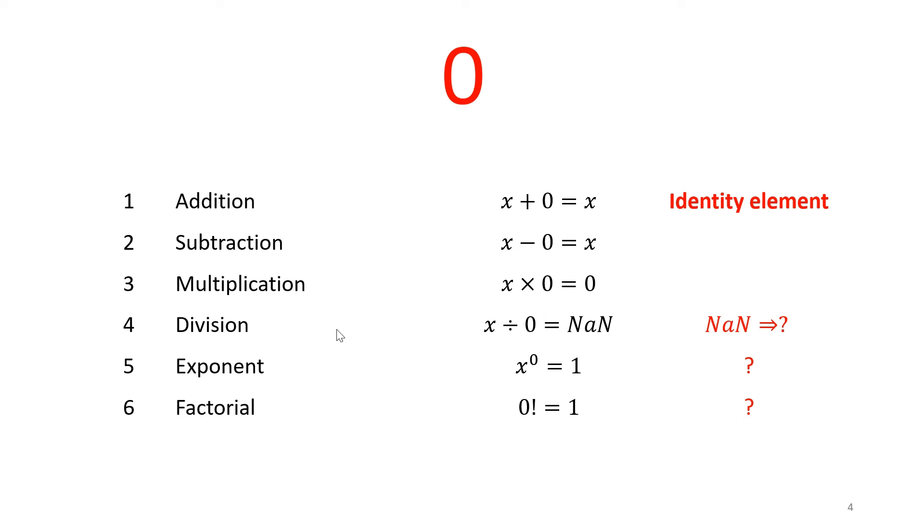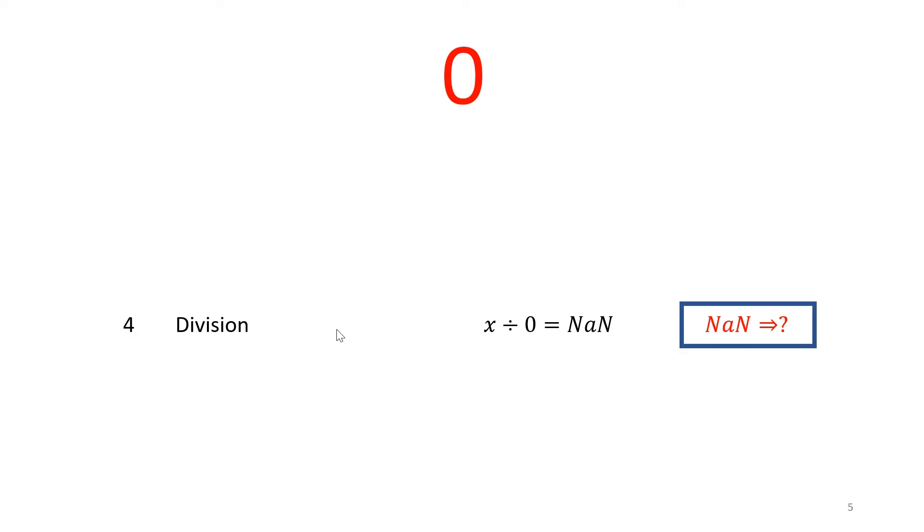Later on, we discussed the concept of zero and some of the fundamental properties of zero. We got stuck at this one component, which is why is x divided by zero not a number? So this particular lecture is really dedicated to this particular question. Why is x divided by zero not a number and what is not a number?